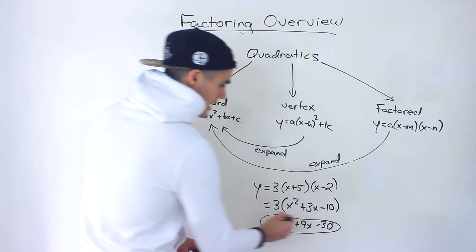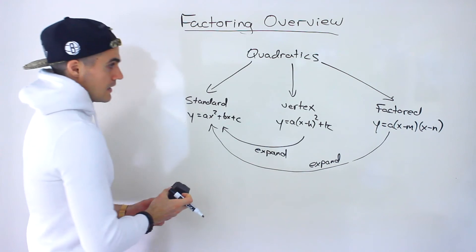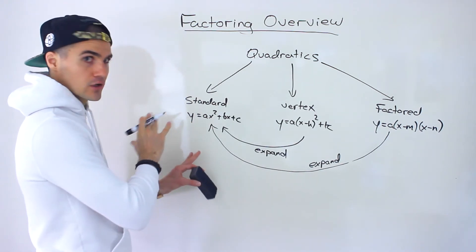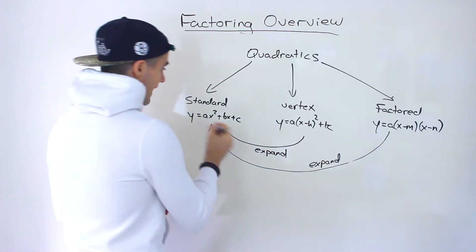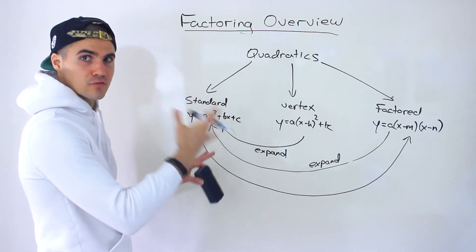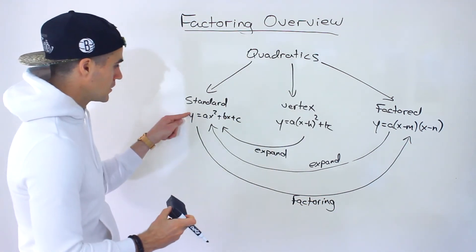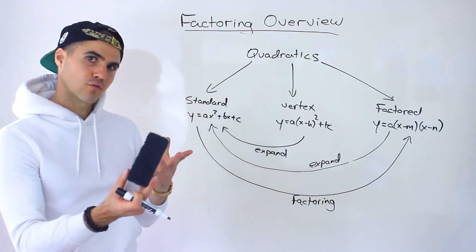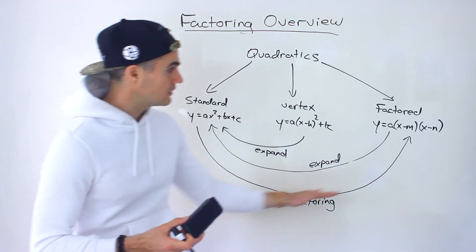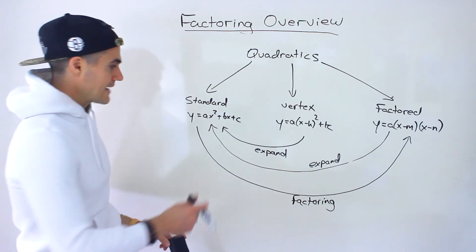So going from factored form to standard form, we're also expanding. We know how to go from vertex to standard and from factored to standard. But more specifically, when dealing with factoring quadratics over the next few sections — this is not for non-quadratics, only quadratics — factoring takes us from standard form to factored form. From the perspective of quadratics, factoring is this process. This is important because factored form gives us the x-intercepts of a quadratic. So if we get a quadratic in standard form and we're able to factor it, we can get those x-intercepts by converting standard form to factored form — that's where factoring comes in.